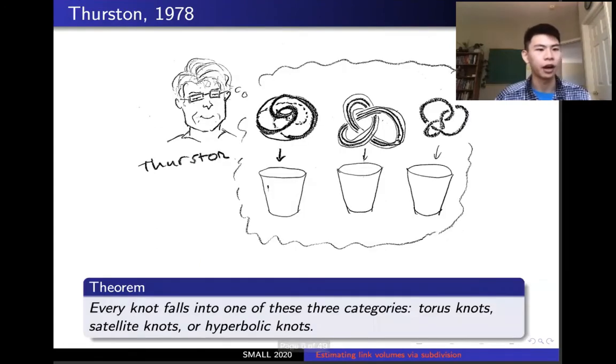Okay, one more thought. In 1978, Bill Thurston proved a big theorem that knots can be classified into one of three categories: torus knots, satellite knots, or hyperbolic knots. We like hyperbolic knots because they have an important associated invariant. Jack will talk more about that.